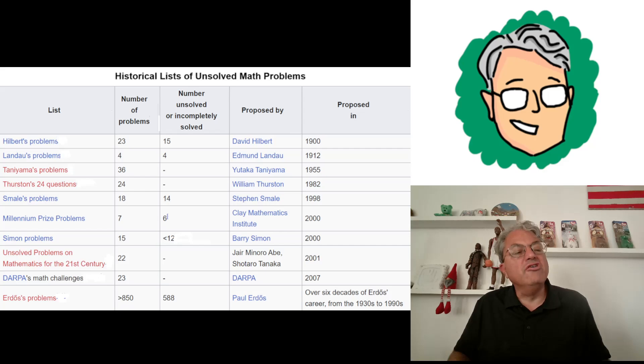Then there was Landau's Problems in 1912. He came up with four unsolved problems, which are still all unsolved. Tanayama came up with 36 unsolved problems in 1955, those have all been solved since. Thurston came up with 24 unsolved problems in 1982 that have also all been solved. Smale came up with 18 problems in 1998, 14 of which are still unsolved.